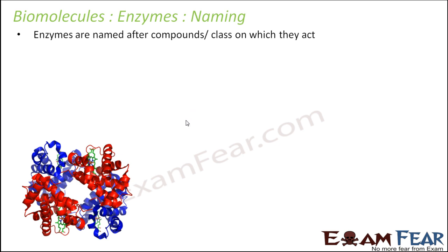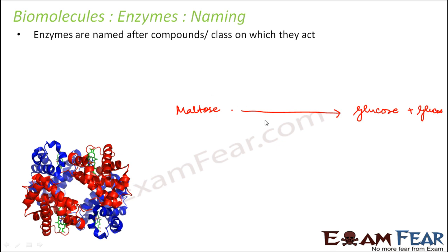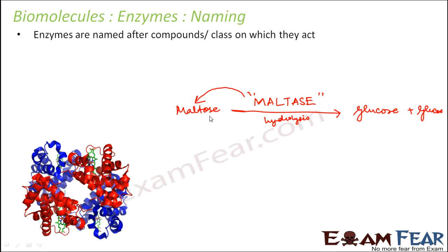Let us take the example of a conversion of a disaccharide, maltose. The process of hydrolysis happens and it gets converted into two units of glucose. In order to increase the rate of this reaction, an enzyme plays an important role. The enzyme will be named after the compound on which it acts, so the name of the enzyme is maltase — named after maltose. All enzyme names end with -ase.